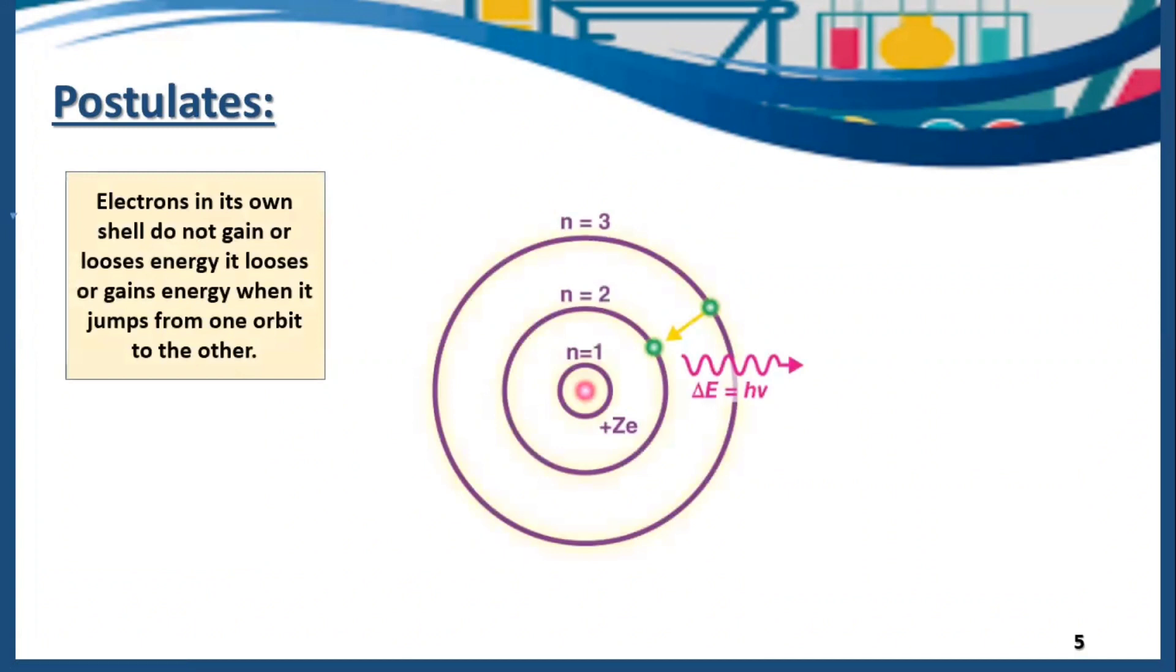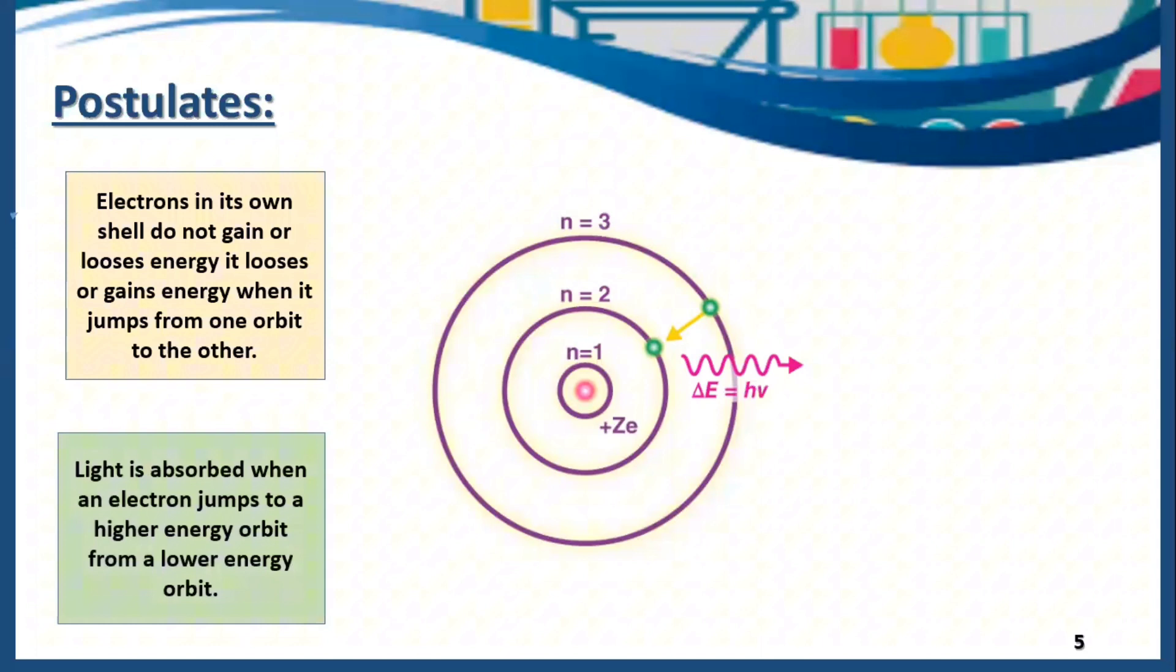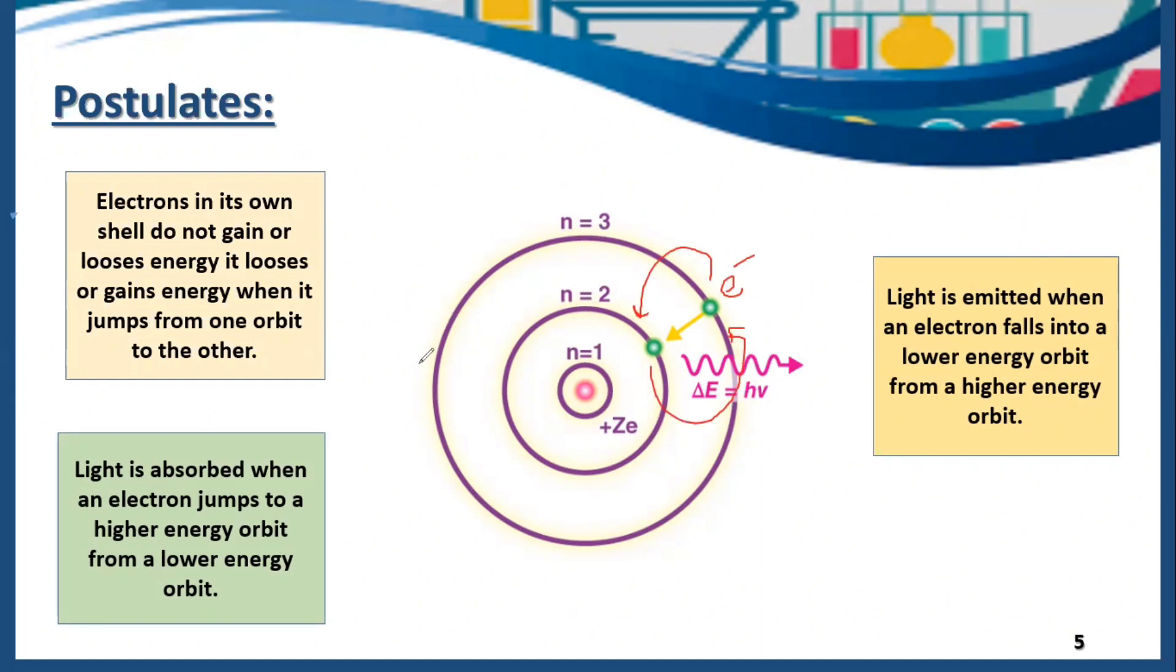By moving on, electrons in its own shell do not gain or loses energy. It loses or gains energy when it jumps from one orbit to the other. Until or unless the electron is present in its orbit, its shell, it will not radiate any energy. It means it will not lose any energy or it is not going to absorb any energy. Light is absorbed when an electron jumps to a higher energy orbit from a lower energy orbit, and light is emitted when an electron falls into a lower energy orbit from a higher energy orbit.